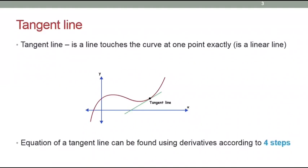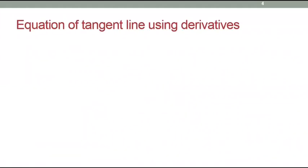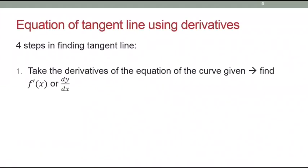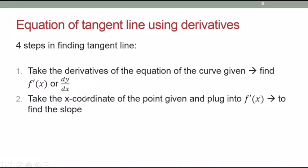The equation of a tangent line can be found using the derivative. There are four steps to follow. The first step: find dy/dx or f'(x) from the equation given. The second step: find the x-coordinate and plug it into f'(x) or dy/dx to get the slope.